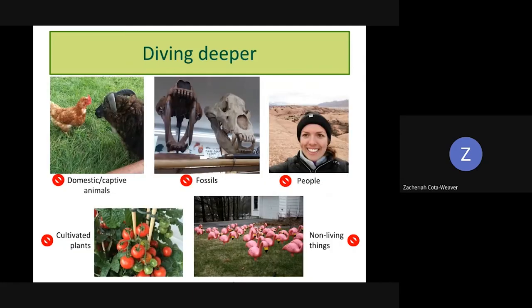Some things you want to stay away from adding: captive and domestic animals don't really have research value on iNaturalist — pets and farm animals should not be added, though that's different from feral animals establishing a presence in the wild on their own. Fossils as well — they were living at some point but not any time recently. People are lovely to see, but iNaturalist is not tracking where people are. Cultivated plants, similar to farm animals, are not tracking wild living things. And non-living things also don't belong on iNaturalist.